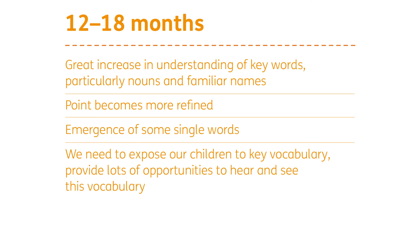Around 12 to 18 months, we see a really big increase in understanding of keywords, particularly around nouns — understanding what things are called — and familiar names, so knowing that this person who is my mummy is called mummy. The point becomes much more refined with a lot more different meanings attached, and they may be able to follow a point and understand what a point means in others. Around 12 to 18 months we may hope to see the emergence of some single words, often the words used most and in context. We need to expose children to key vocabulary and provide lots of opportunities to hear and see it.